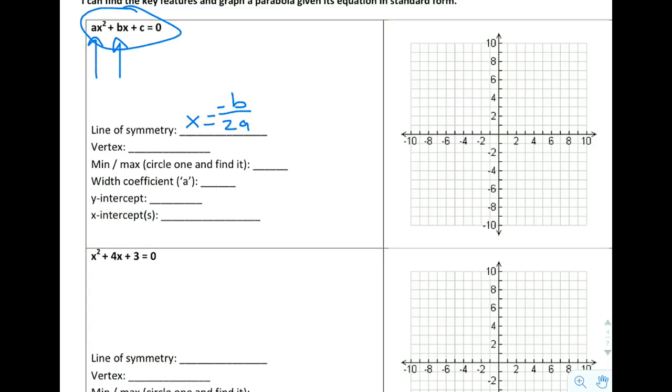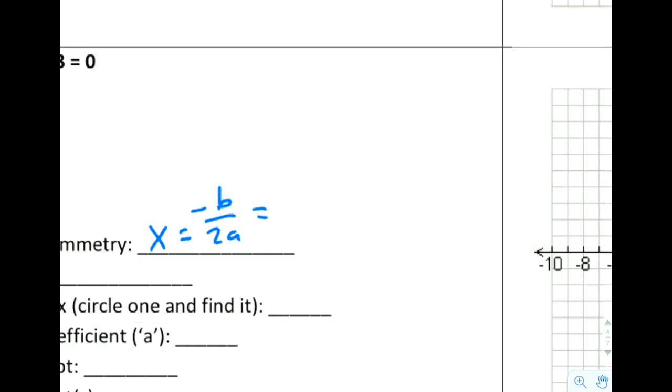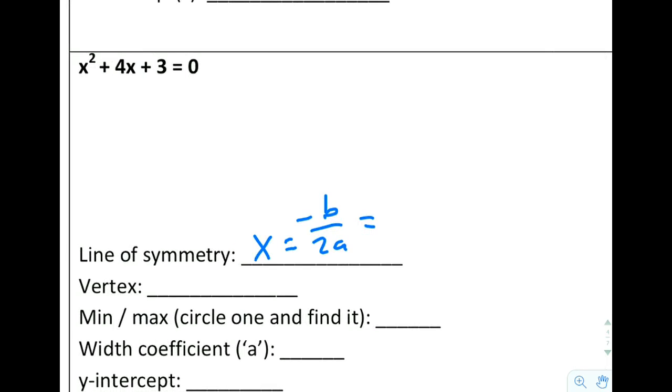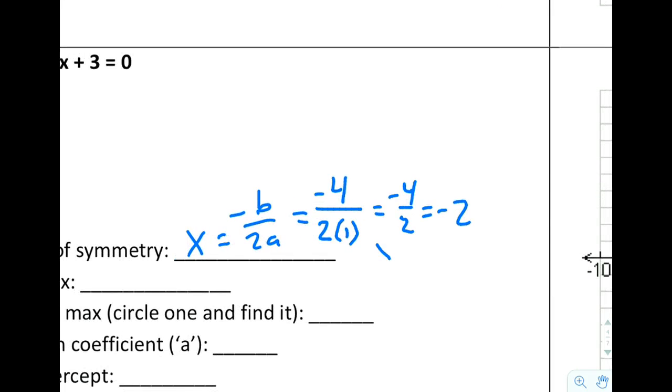So x equals negative b over 2a. Let's go down here and try that with numbers. Line of symmetry: x equals negative b over 2a. And in this case, b is 4. So I'm going to write negative 4 over 2a. And if there's no number in front of x squared, a is going to just be 1. So negative 4 over 2 times 1 equals negative 4 over 2 equals negative 2. So my line of symmetry, if I were to clean this up a little bit, is going to just simply be x equals negative 2.